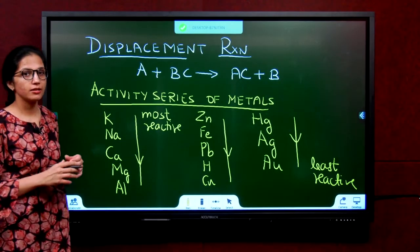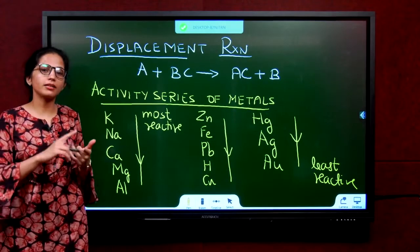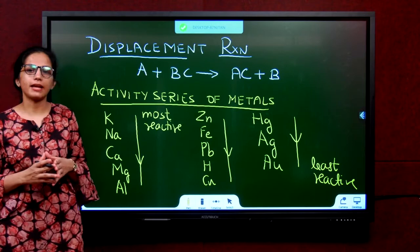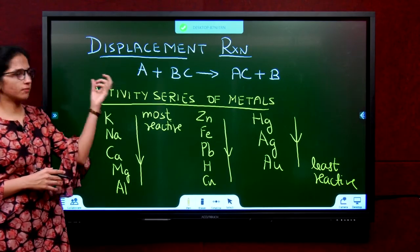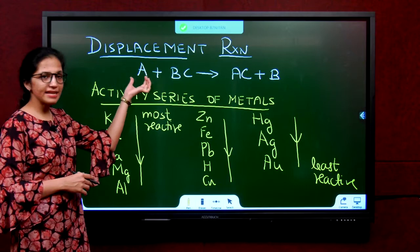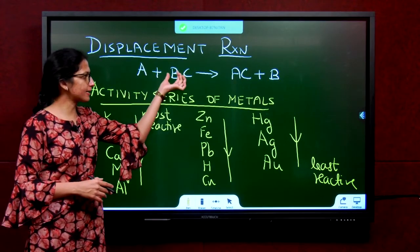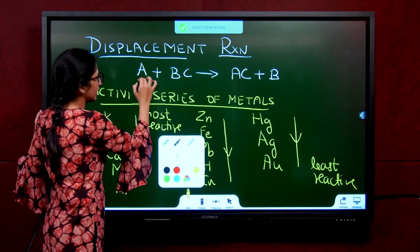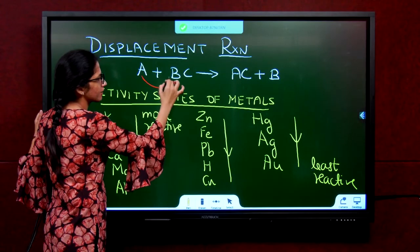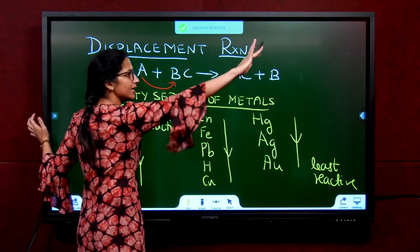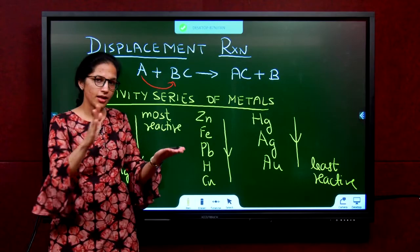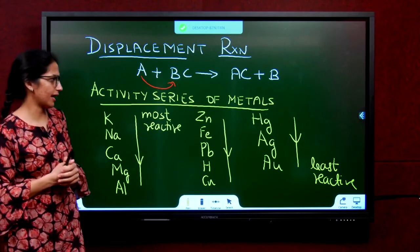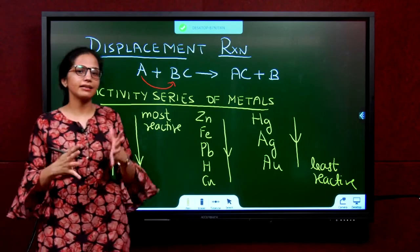The next type of reaction is displacement reaction. Until now, we have already finished combination and decomposition. Now, displacement reaction. Displacement reaction means what? A more reactive element displaces a less reactive element. If A is more reactive than B, A will go and sit in the place of B, so this becomes AC and B is displaced. This is called a displacement reaction.